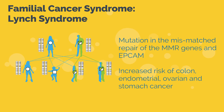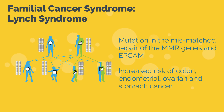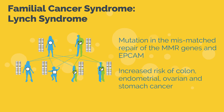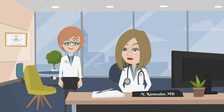Lynch syndrome is inherited in an autosomal dominant fashion and is associated with an increased risk of colon, endometrial, ovarian, and stomach cancer. A number of moderately increased risk gene mutations are also associated with ovarian cancer. About 3 to 5% of patients that come in for testing for hereditary breast and ovarian cancer will have a mutation in one of these moderately increased risk genes, but at this time we are not sure how to use this information to guide patients and their families.